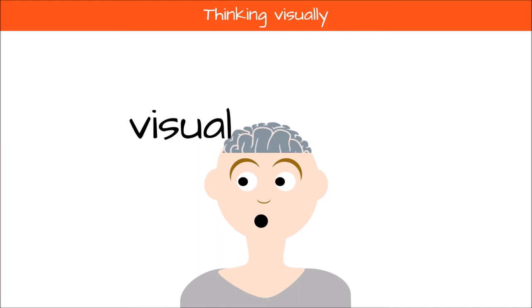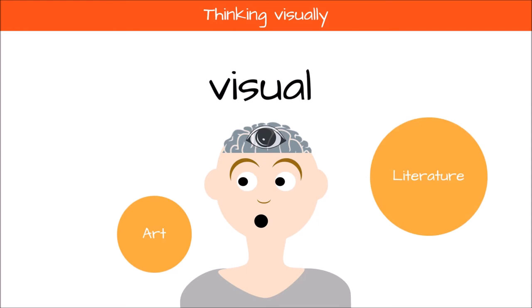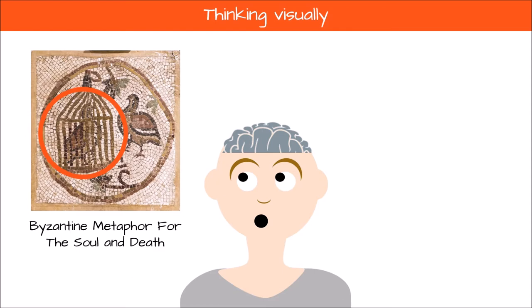Being able to see something in the mind's eye using metaphors and visualization has been widely used in art and literature as well as in the scientific world, allowing enormous progress. In Byzantine iconography, the bird in the cage represents the human soul trapped inside the body.